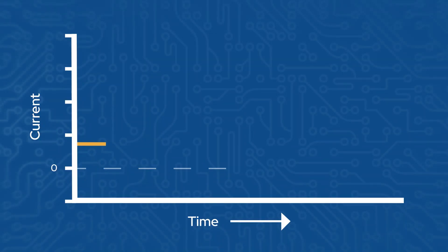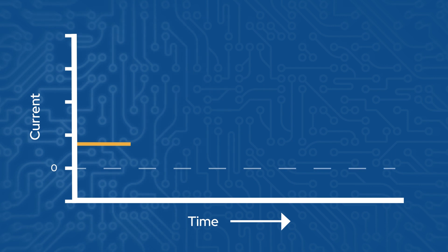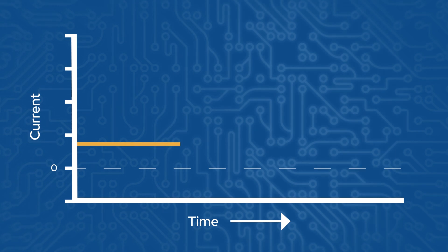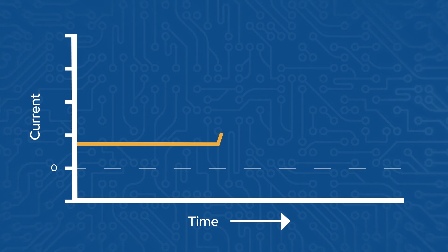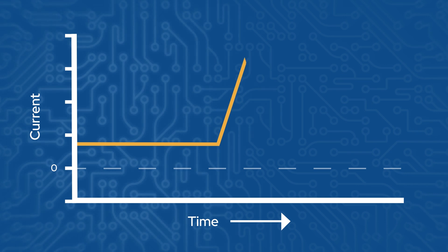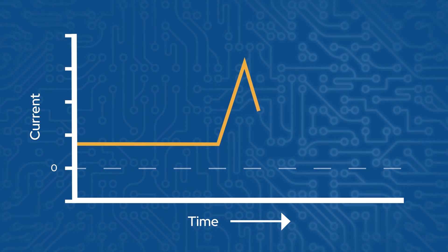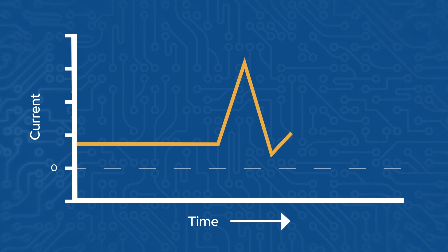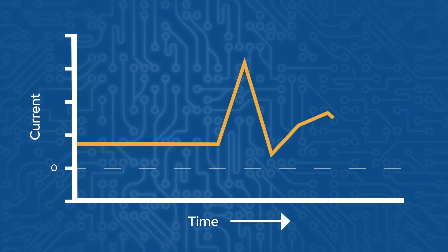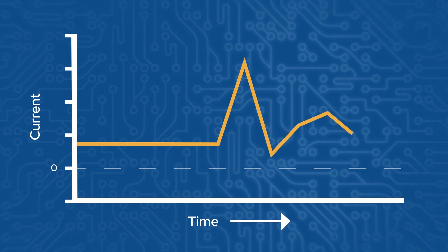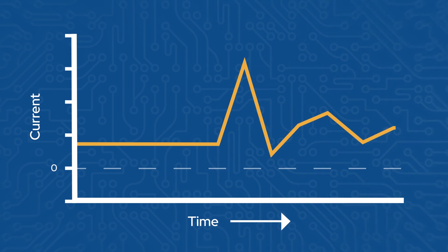It's not because engineers make things complicated — there are actually really good reasons. Let's start with DC power because it's pretty straightforward. With DC power, the power supply provides a constant voltage. For example, USB outputs a steady 5 volts. The current only flows in one direction, from negative to positive, even though the amount of current can change depending on how quickly we want the USB device to charge.